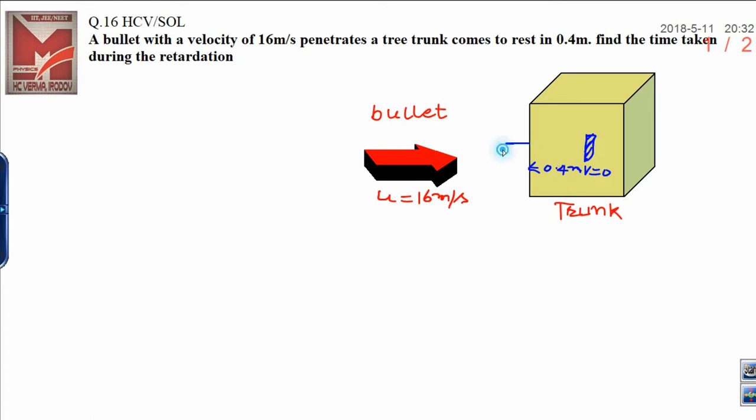Suppose that bullet is entering at this position. You know we are ignoring the air flow here, that is why both have the same velocity at this position as well as this position, that is why I am putting it 16 meters per second. Now, first of all I need to calculate the retardation here.